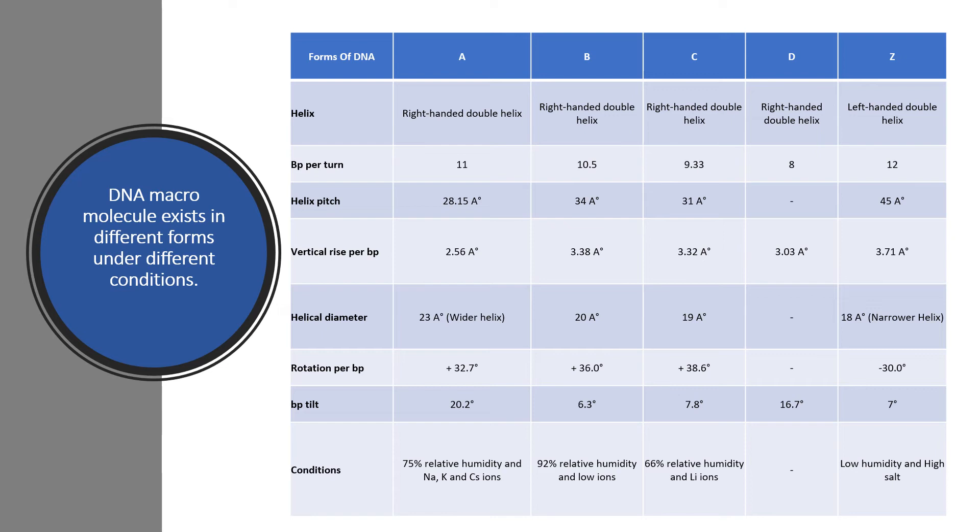Base pair tilt is 20.2 degrees in A DNA, 6.3 degrees for B DNA, 7.8 degrees for C, 16.7 degrees for D and 7 degrees for Z DNA.